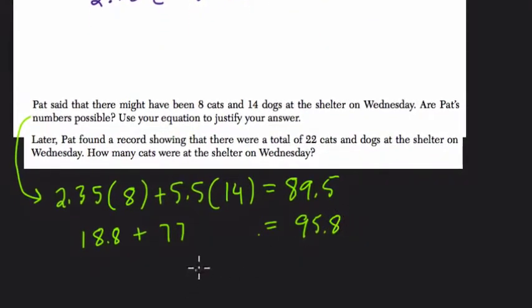And you can say, in your explanation, $95.80 does not equal $89.50. So he can't be correct because it doesn't give you the correct total amount.